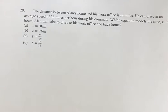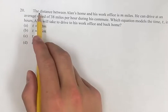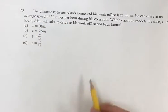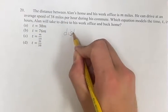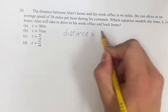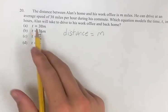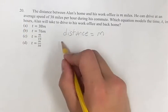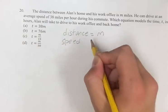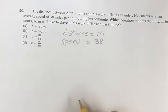Hello and welcome back to another video. In this problem we're told the distance between Allen's home and his work office is m miles, the average speed that he travels is 38 miles per hour, and the time we're marking by t.